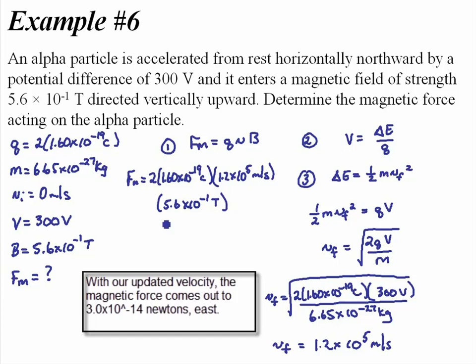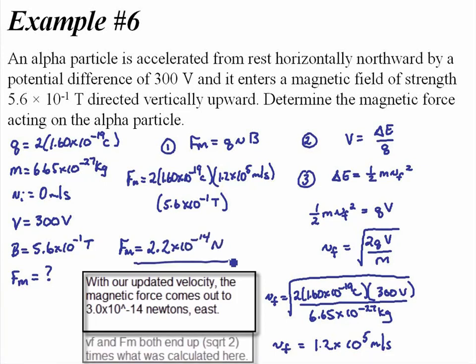And I should get 2.15 times 10 to the negative 14. I'm just going to check my velocity here. Yeah, I think that's right. Magnetic force 2.2 times 10 to the negative 14 newtons.